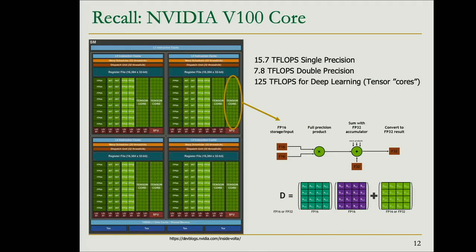Essentially, each tensor core multiplies two 4×4 matrices and accumulates with the original values of matrix C. By decomposing an entire matrix multiplication into many of these tiles and mapping them onto tensor cores, you can achieve very high throughput — essential for training networks fast and efficiently.